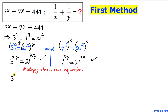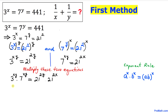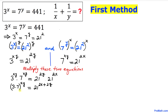Now let's multiply these two equations. On the left-hand side we get 3 power xy times 7 power xy, and on the right-hand side 21 power 2y times 21 power 2x. The left-hand side can be written as (3 times 7) power xy, and the right-hand side as 21 power (2x plus 2y), using the rules of exponents.